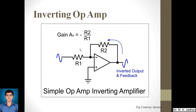Thus the voltage gain of the circuit is determined solely by the relative values of R2 and R1. The negative sign indicates that the output is inverted — that is, 180 degrees out of phase with respect to the input. That is why it is called an inverting amplifier.